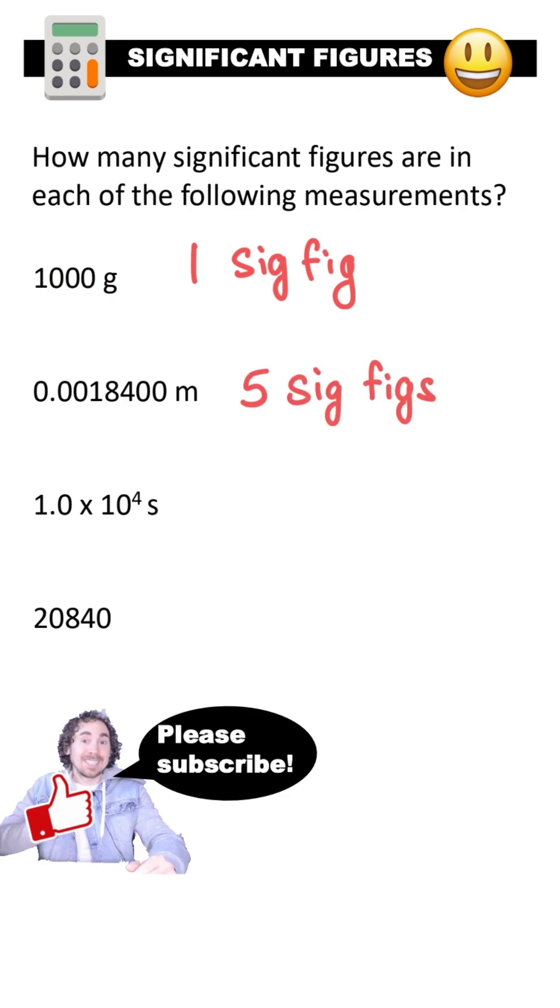The second measurement has five significant figures. The leading zeros are not significant. All the non-zeros are significant. And these trailing zeros are significant because of the decimal that's drawn in here. It actually doesn't matter where the decimal shows up. It makes all the zeros that come at the very end of the number significant.